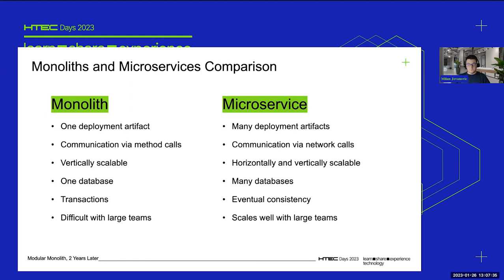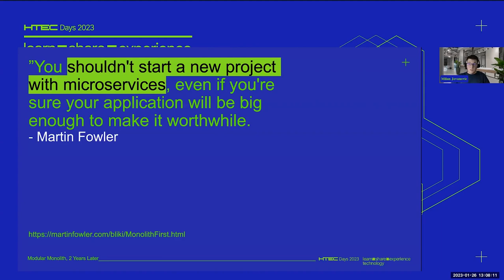Finally, in terms of team scalability: with a monolith architecture it is difficult to scale to a large team because everybody is working on the same system, leading to a lot of potential conflicts. On the microservices side it's relatively easy to scale to a large team because you can have each team working on a separate service. That's the high-level comparison between monoliths and microservices.